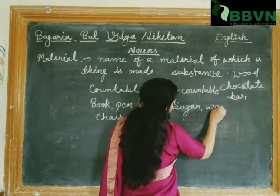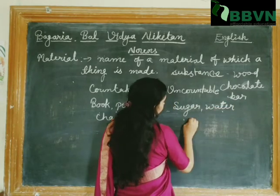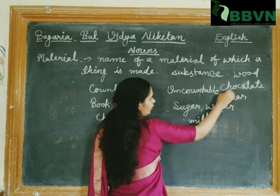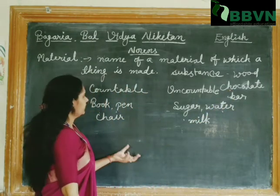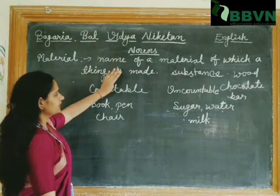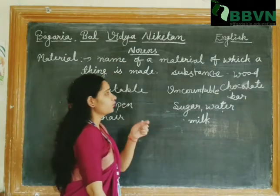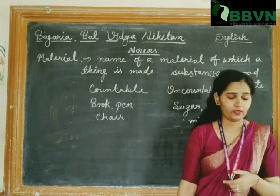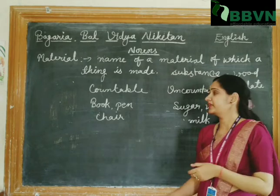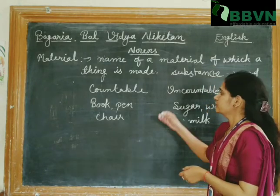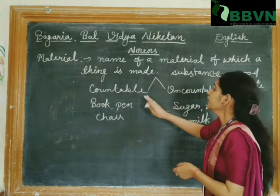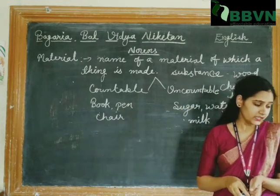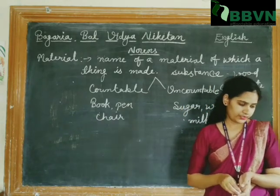Water, milk — as I said, chocolate. So in this way, the name of a material of which a thing is made is a material noun. And ultimately what we do is classify them: one is countable and the second one is uncountable noun.